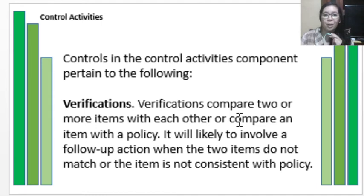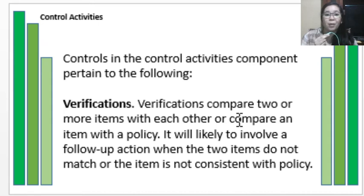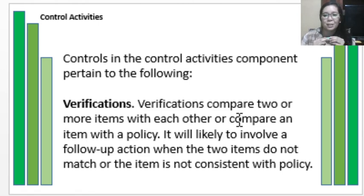Next is verification. Verifications compare two or more items with each other, or compare an item against a policy — confirming whether an existing record matches the physical existence of an item, or whether a transaction is in accordance with what has been authorized. A follow-up action is likely when the two items do not match or the item is not consistent with policy. This is part of the monitoring and appraisal process.